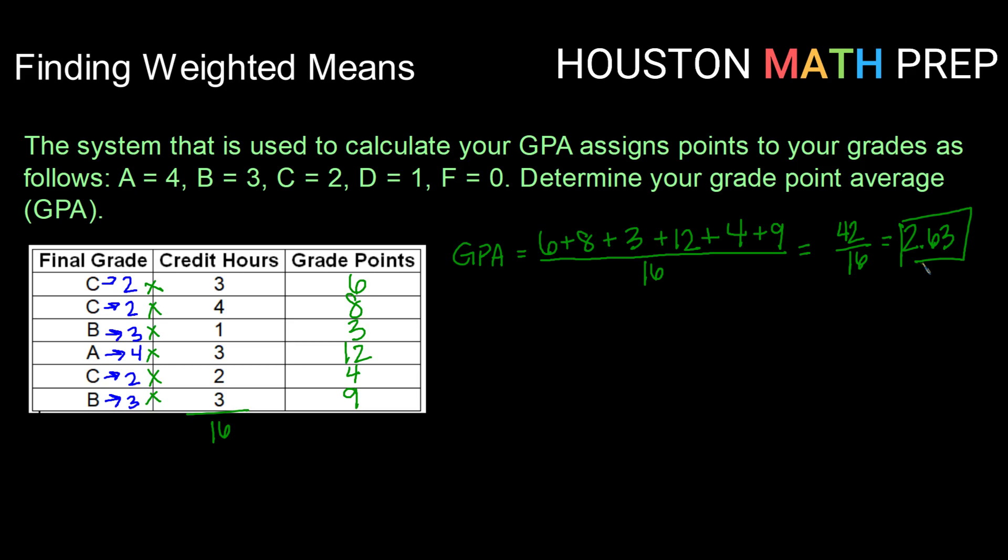Generalizing that process to talk about finding weighted means in general, what we did is we multiplied the value times the weight for each of our categories. So each one we multiplied value times weight to give us a number.